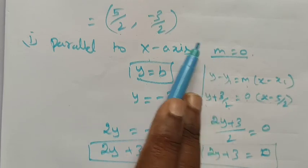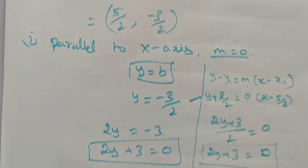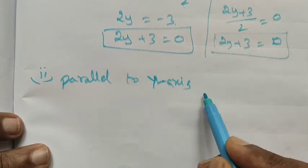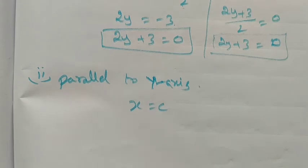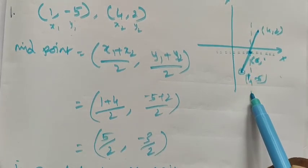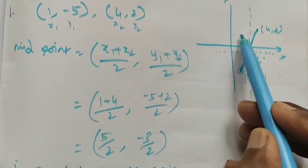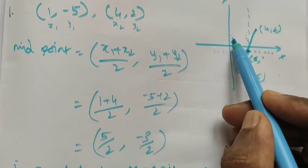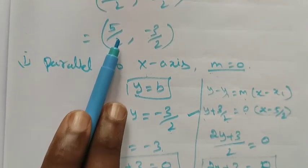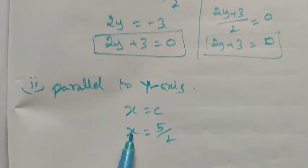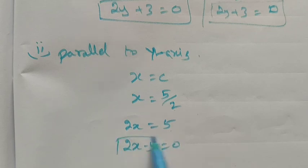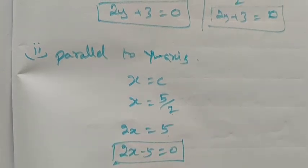Second, the line parallel to the y-axis passing through the midpoint. For a line parallel to the y-axis, the formula is x = c, where c is the x-coordinate of the midpoint, which is 5/2. So x = 5/2. Multiplying both sides by 2: 2x = 5, and rearranging: 2x - 5 = 0. This is the equation of the line parallel to the y-axis. Thank you, students.